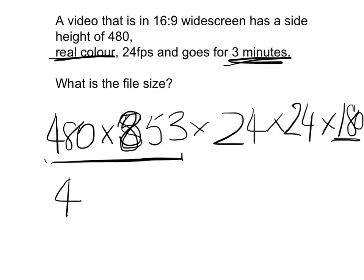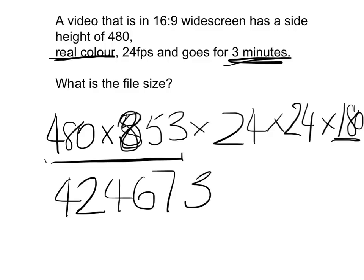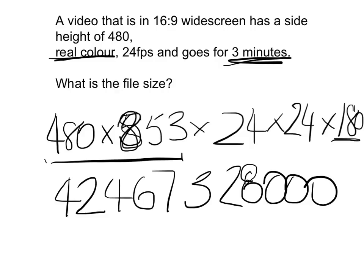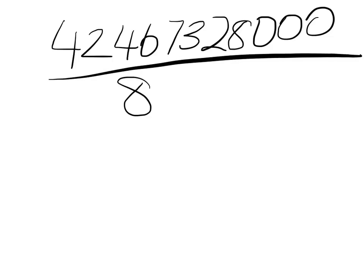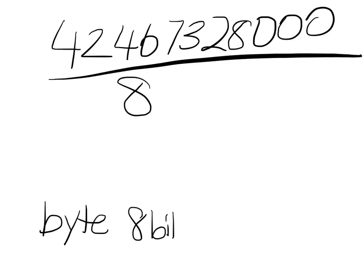When I put that into my calculator, I get a massively large number. You might think that's odd because a three-minute video doesn't normally seem that large, but remember that is the number of bits in the video — not bytes, kilobytes, or megabytes. So the next step is to divide that big number by 8, because for every byte there are 8 bits. That converts it from bits to bytes.